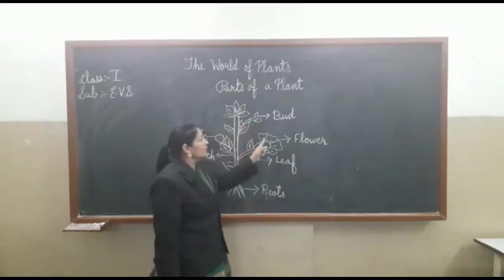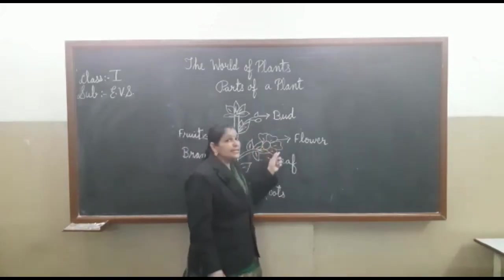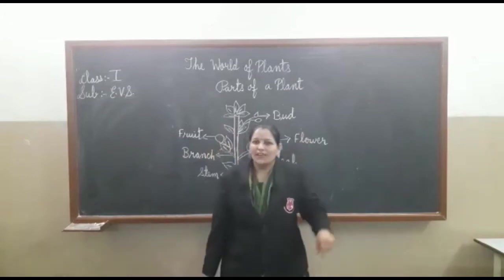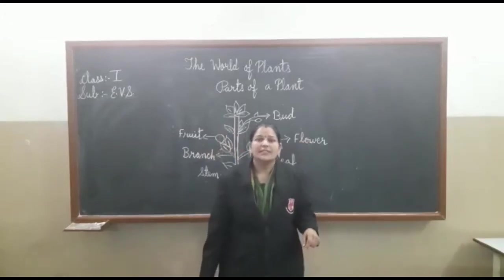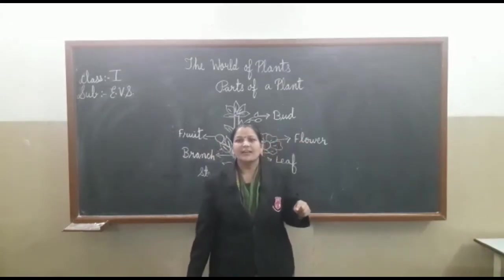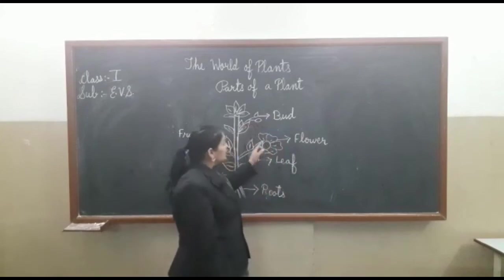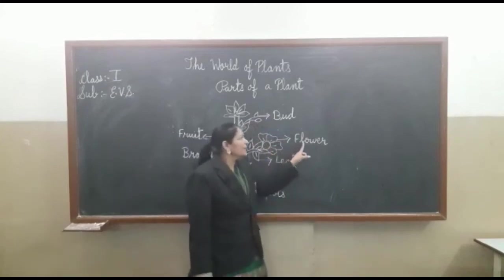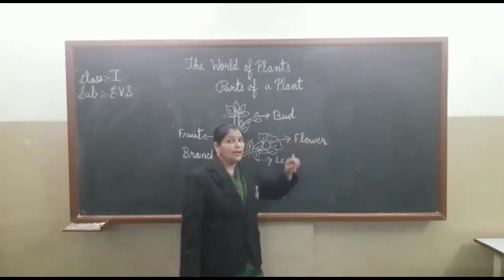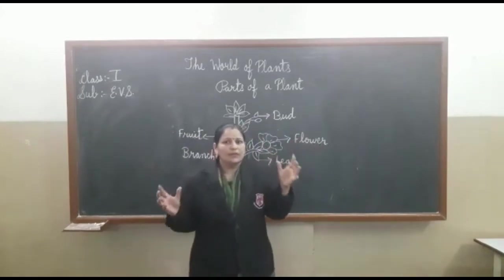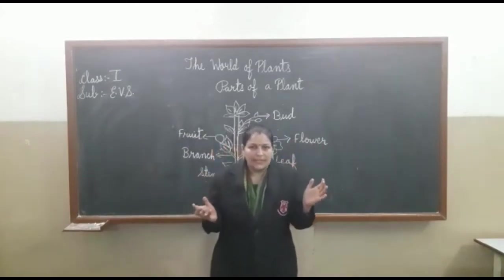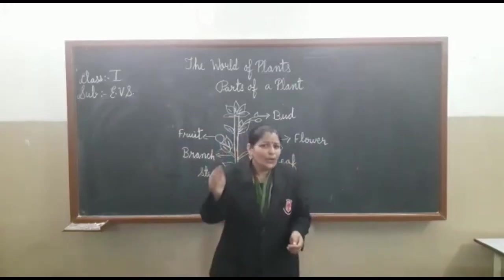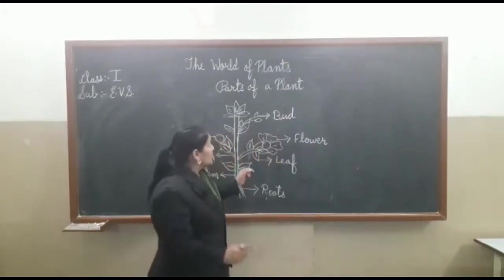What a beautiful thing is this — all of you love it. This is a flower. Let us read the spelling: F-L-O-W-E-R. A flower. Beautiful flowers are there. I love flowers, you also love flowers.